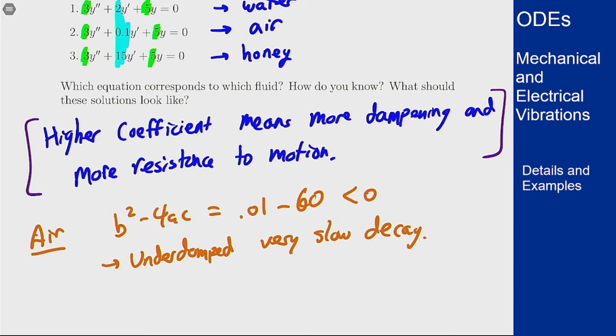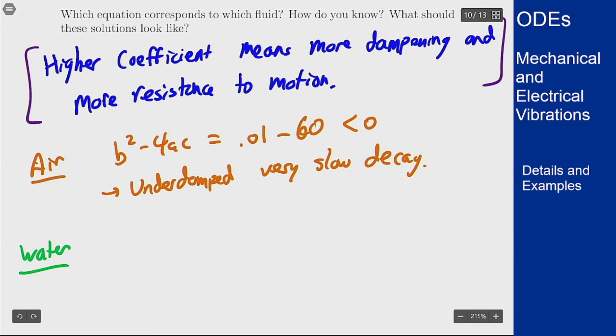For the water we have a 2 for that coefficient, which means b squared minus 4ac is 4 minus 60. Still negative, it's now like negative 56. So it's not quite as close to 60 but it's still negative. It's still underdamped but it's going to have a significantly faster decay than the air one will.